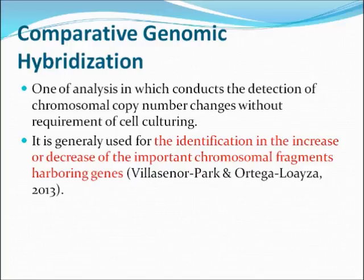Comparative genomic hybridization (CGH) is an analysis that can be conducted using microarray in the context of gene discovery. It is a modified in-situ hybridization technique which allows the detection and mapping of DNA. This analysis employs the detection of chromosome copy number changes without cell culture, helping researchers identify chromosomal abnormalities.